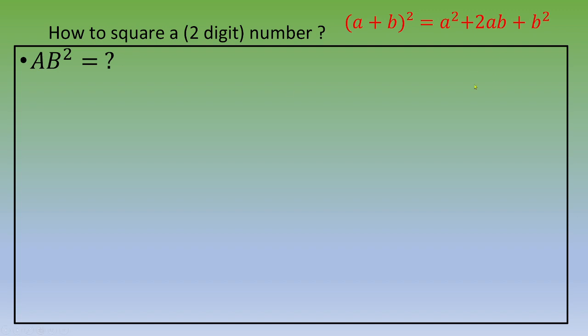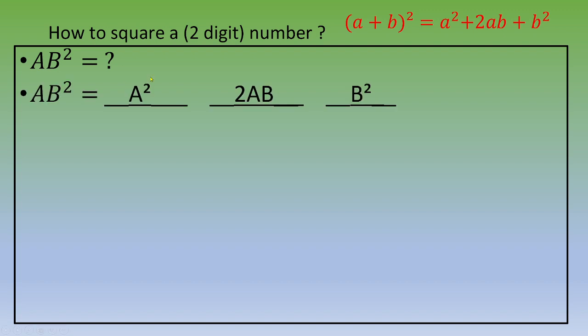You can divide 'ab' squared into three groups: group 1 is a², group 2 is 2×a×b, and group 3 is b². This is the beginning of the method. Let's apply it now.